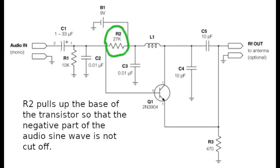The audio signal goes to the base of the transistor so that it can be amplified and mixed with the radio frequency signal. The 27 k ohm resistor pulls up the base of the transistor so that the negative part of the audio signal doesn't get cut off. Otherwise the negative part of the sine wave would get cut off because the transistor would not amplify it.